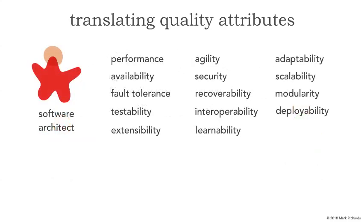As a software architect, we talk about all these ilities — non-functional quality attributes, what I usually call architectural characteristics: performance, availability, interoperability, recoverability, testability. Take testability — that's a really good one. That generally means not only the ease of testing in our architectures, but also the completeness of testing. How complete have we done the testing in that particular application? And there are certain architecture styles that support high levels of testability. But is that really a concern for a business user or a business stakeholder?